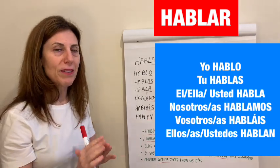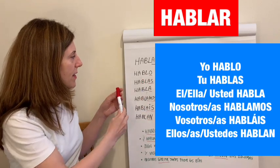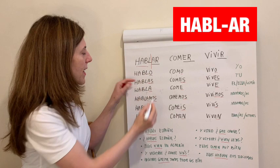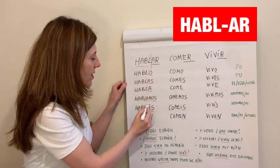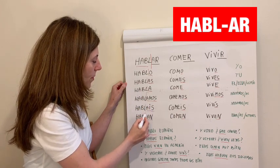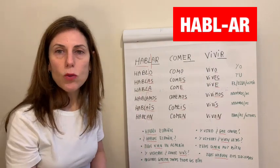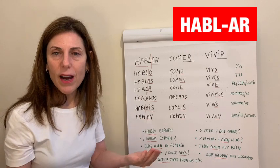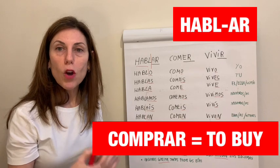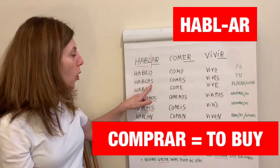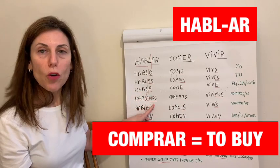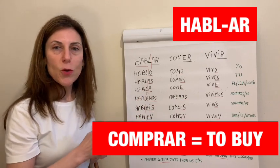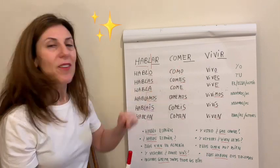Now let's look at comer. What we are doing here is literally splitting the word into the root and the ending — and it's only the ending that changes. This ending applies to any other regular verb that falls into this ER group. Another example is comprar, which means to buy: yo compro, tú compras, él compra, nosotros compramos, vosotros compráis, ellos compran.